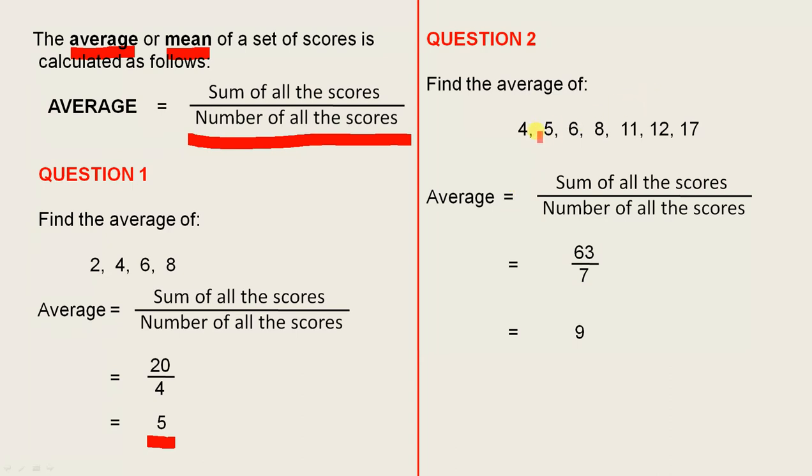Find the average of these numbers here. Now look at them carefully. We can see that there are 7 numbers: 4, 5, 6, 8, 11, 12, 17. So the average is the sum of all the scores over the number of all the scores. When you add those up carefully you get 63. The number of all the scores is 7. 63 divided by 7 is 9, so that's the average. Now when students know their tables very well, this is very straightforward because 7 nines are 63. That's the importance of knowing your tables well - it's very time saving.